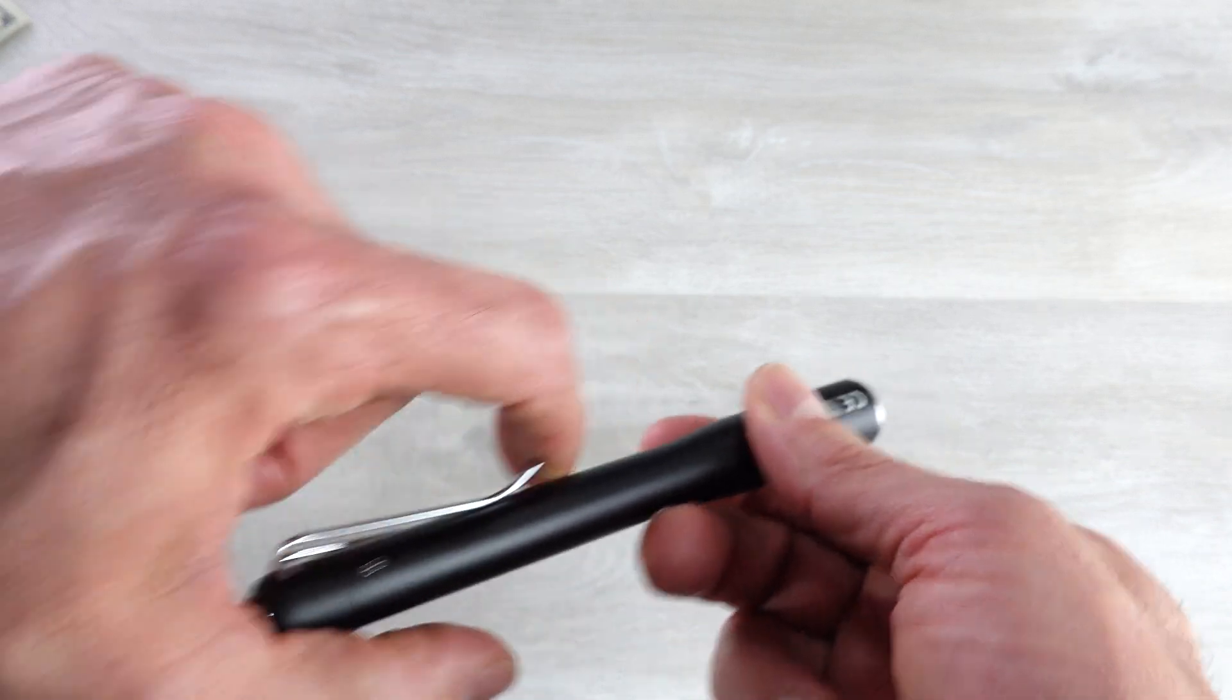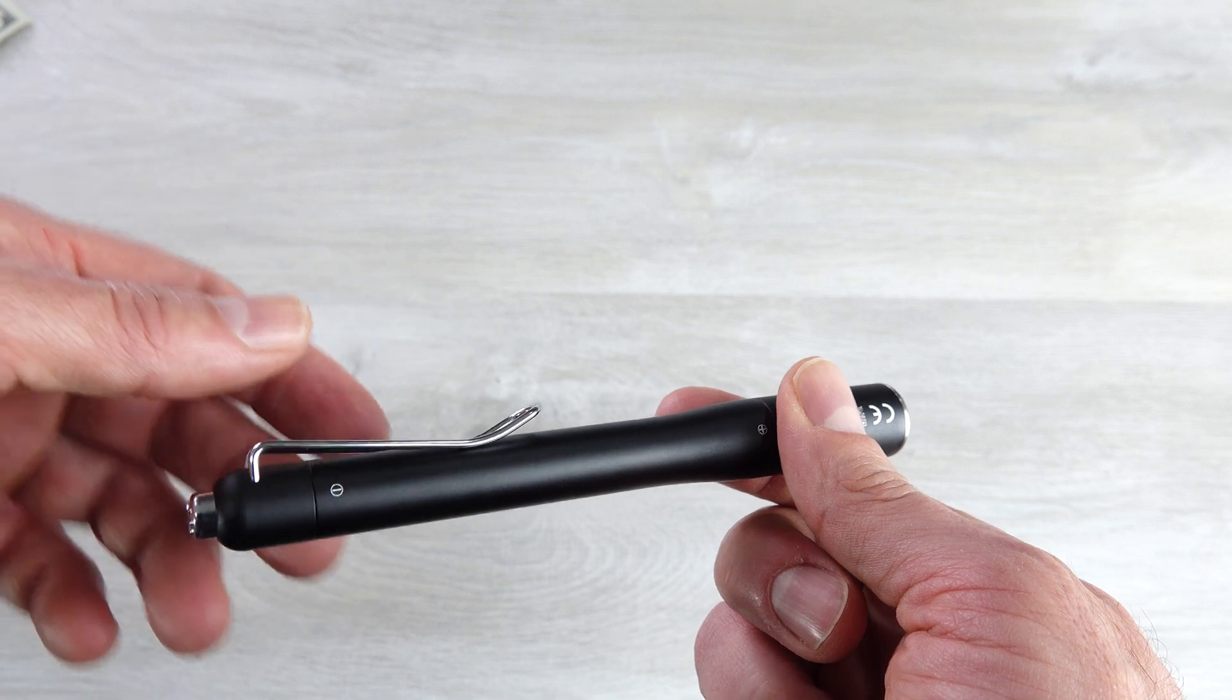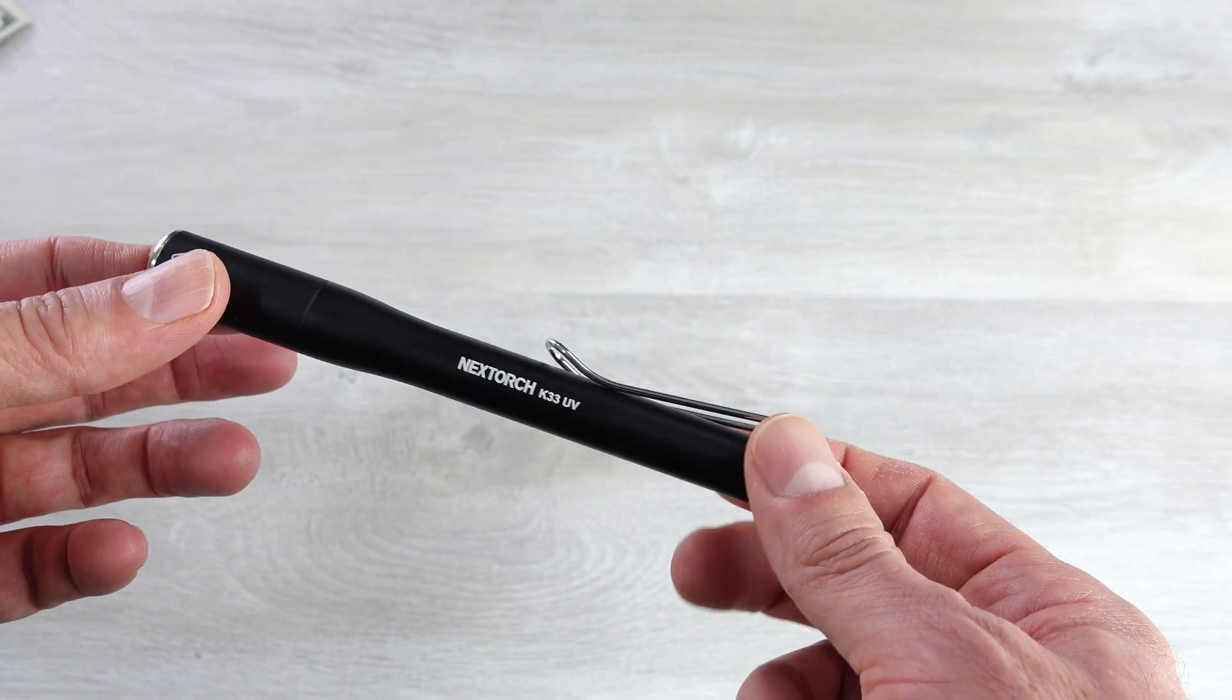So when I go to get this out of my pocket or the other lights of the same pocket clip, I actually find myself that I have to grip the tip of it here with my finger to pull it out because it is so firmly in your pocket. But that is also to say you are not likely to lose this out of your pocket.